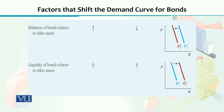اگر کسی بھی bond کے ساتھ جو liquidity attached ہے — یعنی کہ وہ کتنا readily cash میں convert ہوگا — relative to other assets, if the liquidity increases, that causes the demand to increase, and as a result we see a shift in the demand curve towards the upside. Liquidity increase کر گیا تو people will demand more of that particular financial asset, and we see a forward shift in the demand curve, whereas if the liquidity declines تو demand curve backward shift کر جاتا ہے.